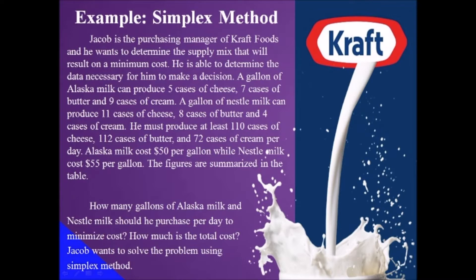He is able to determine the necessary data for his decision. A gallon of Alaska milk can produce 5 cases of cheese, 7 cases of butter, and 9 cases of cream. A gallon of Nestle milk can produce 11 cases of cheese, 8 cases of butter, and 4 cases of cream.